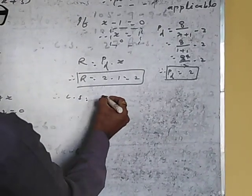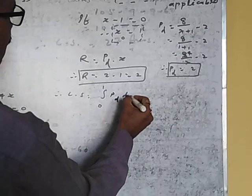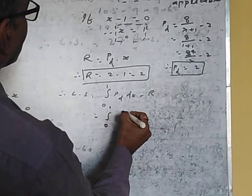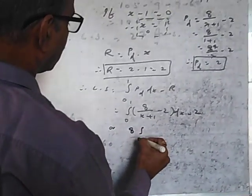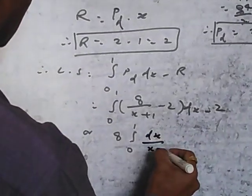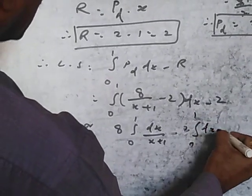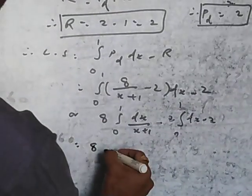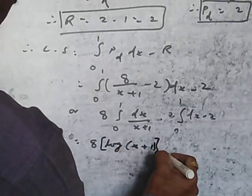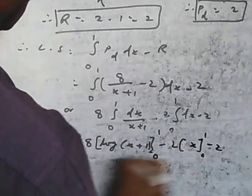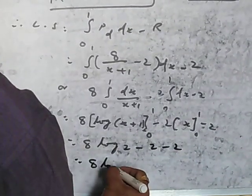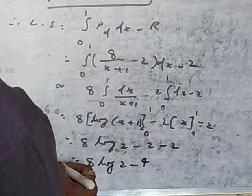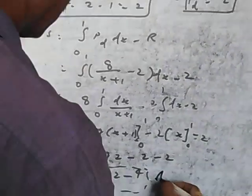Therefore CS is equal to integration 0 to 1 of PD dX minus R. Integration 0 to 1 of (√(8x+1) minus 2) dX minus 2. Integrating: 8 times log(x+1) from 0 to 1 minus 2x from 0 to 1 minus 2. Putting limits: 8 log 2 minus 2 minus 2, so consumer surplus equals 8 log 2 minus 4.